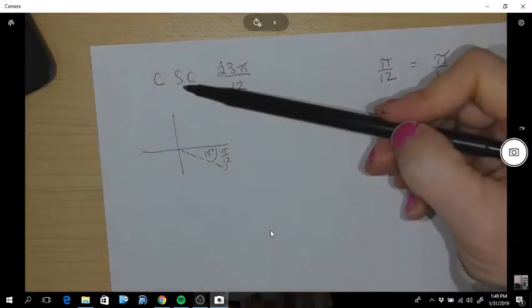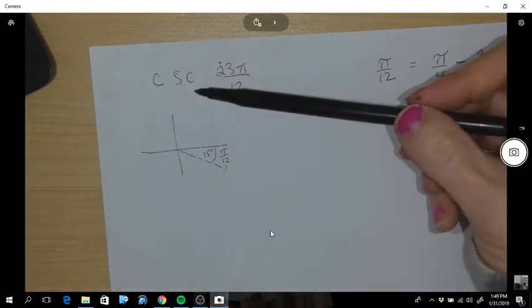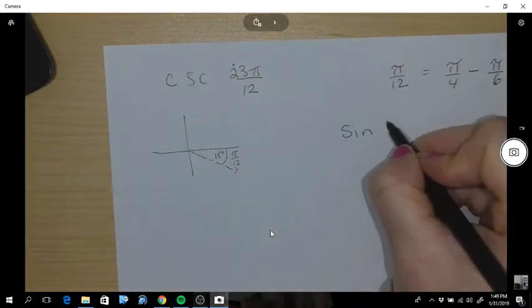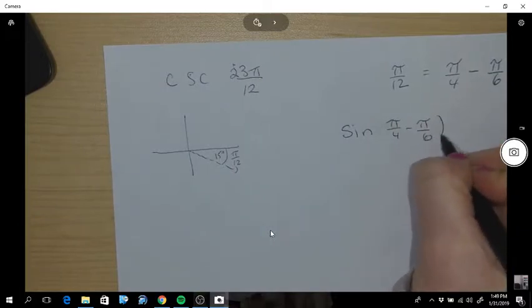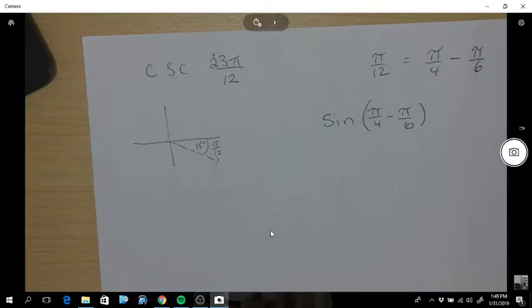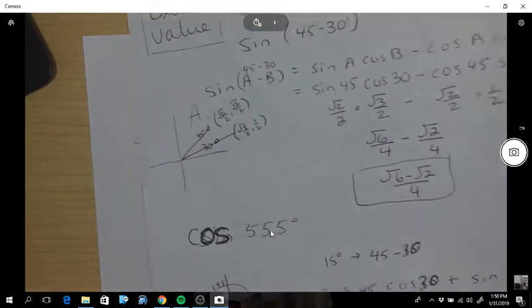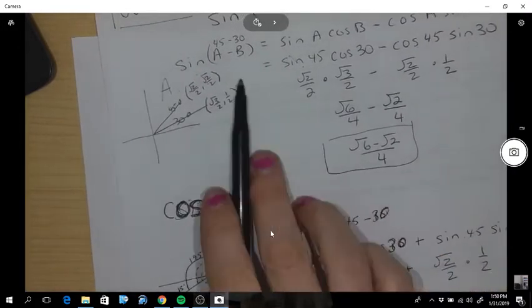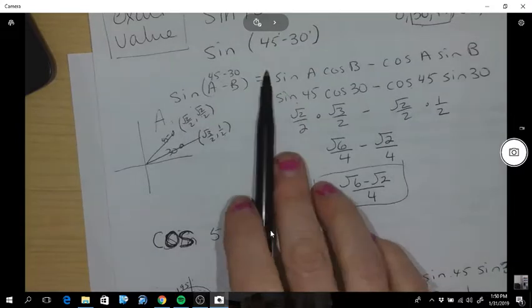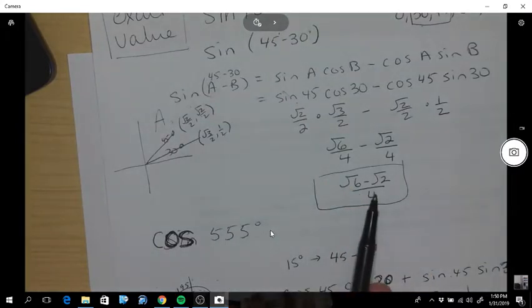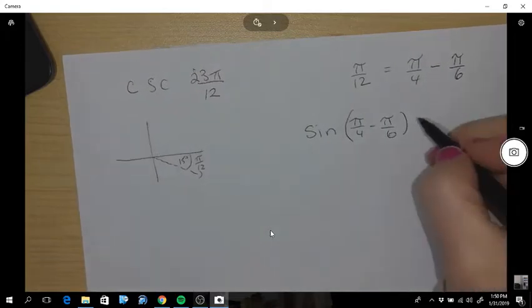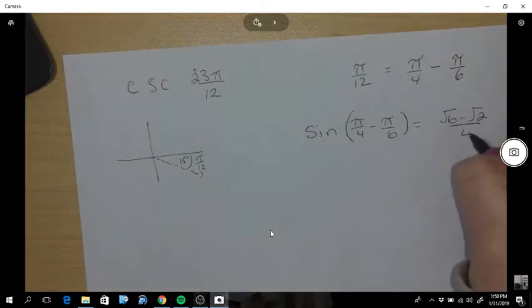Now cosecant, we know that's the inverse of sine, so what you would do is find the sine of that subtraction. So we actually did that in our first one, because I want to show you something different here. In our very first one, we got sine of 15, sine of 15 is root 6 minus root 2 over 4, and you already know how to get that.